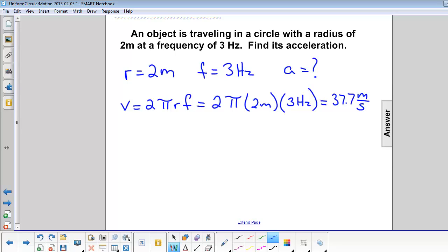To find acceleration, we use a equals v squared over r. Velocity is 37.7 meters per second. And radius is still 2 meters. So the acceleration is 710 meters per second squared.